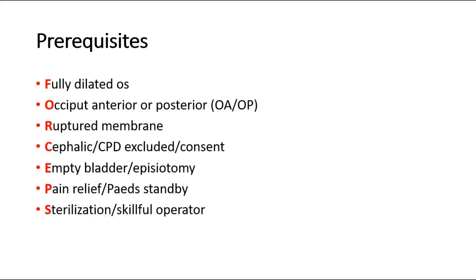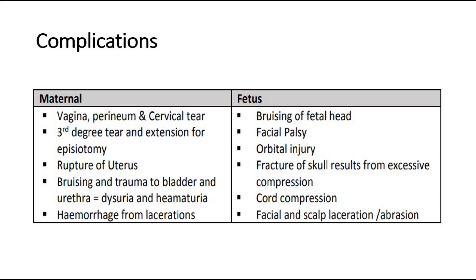There are some complications that might occur to the mother and to the fetus after forceps delivery. For the mother, there may be vaginal, perineal, and cervical tears. It may also cause a third-degree tear and extension of the episiotomy, uterine rupture, bruising and trauma to organs such as the bladder and urethra causing painful urination and hematuria, or bleeding from lacerations.